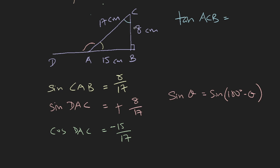Finally, let's look at tangent. Tangent of angle ACB — tangent is the ratio between the opposite and the adjacent side. The opposite of this angle is 15 and the adjacent is 8. You need to realize that which side is opposite or adjacent really depends on which angle you are looking at — the opposite side of one angle is the adjacent of another. So tangent of ACB is 15 over 8, and since this angle is in the first segment, this is a positive value.